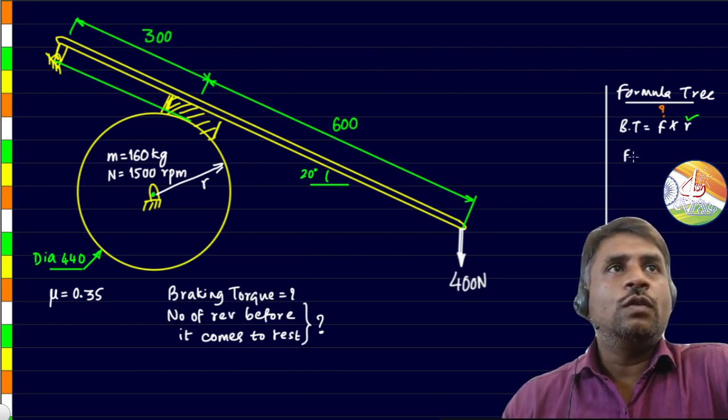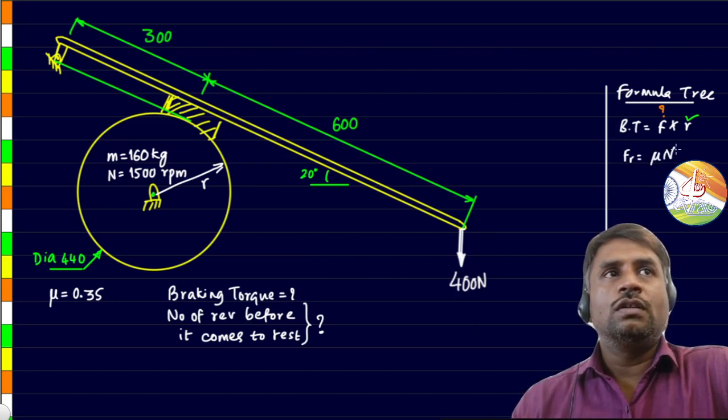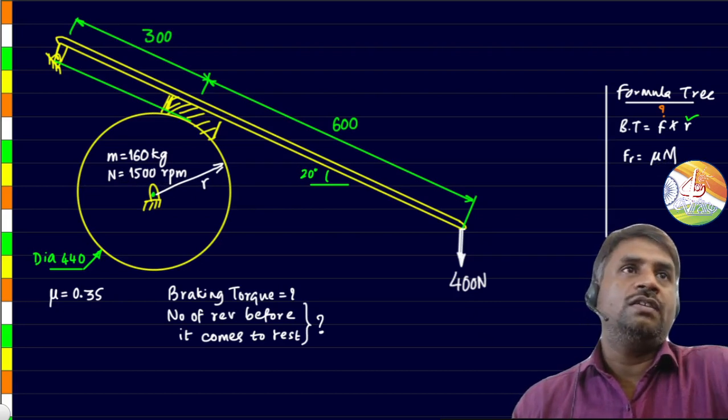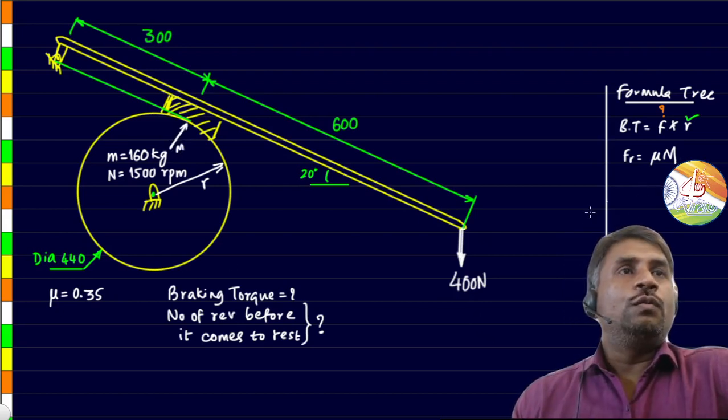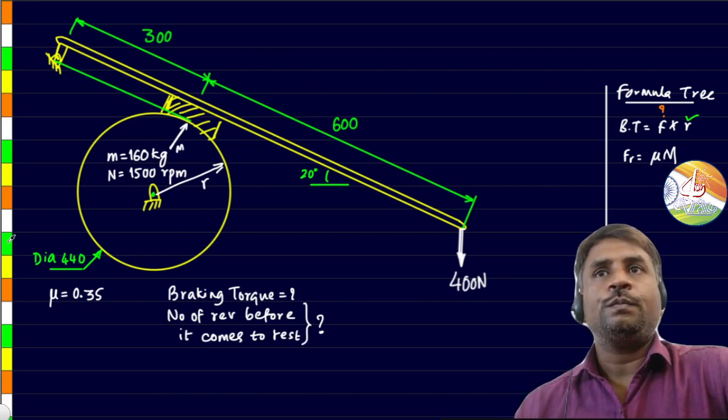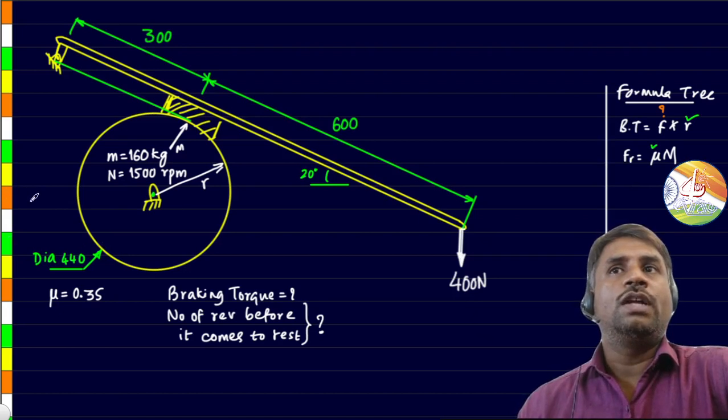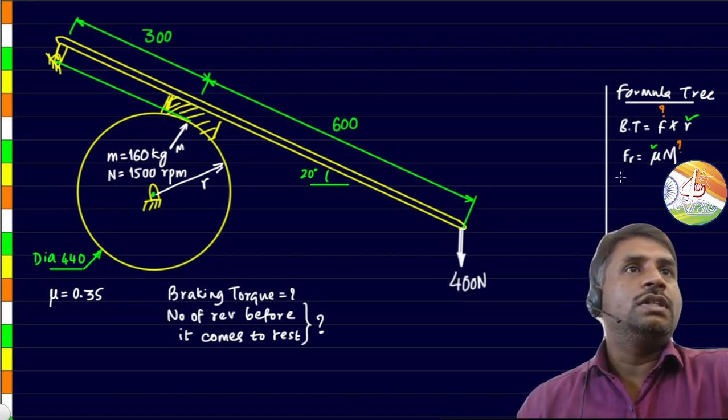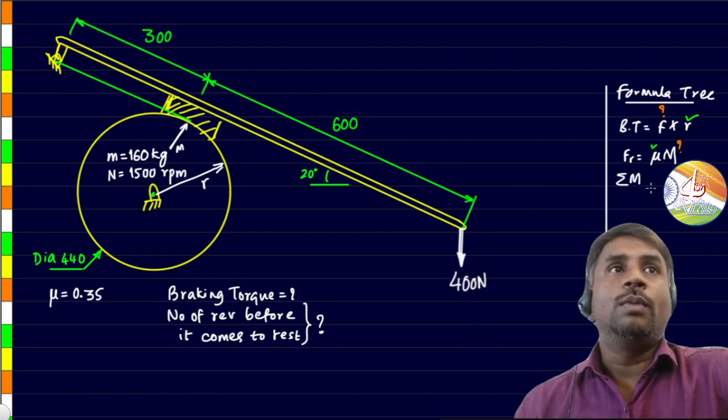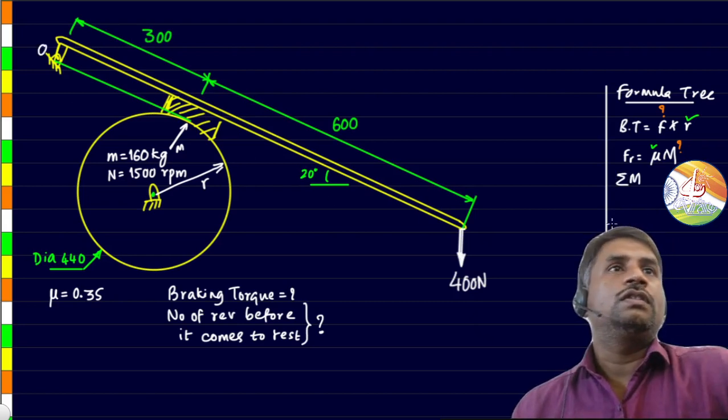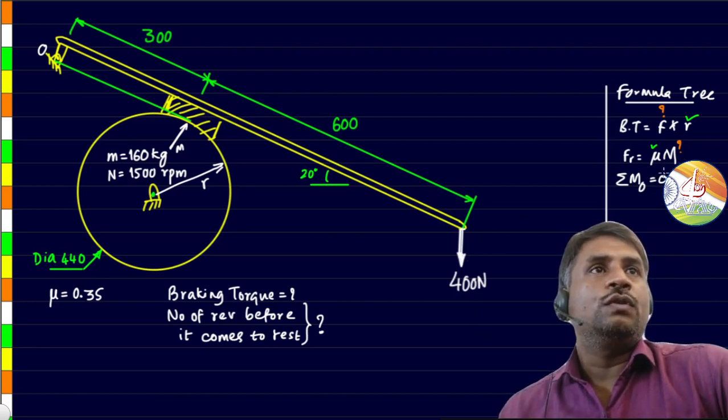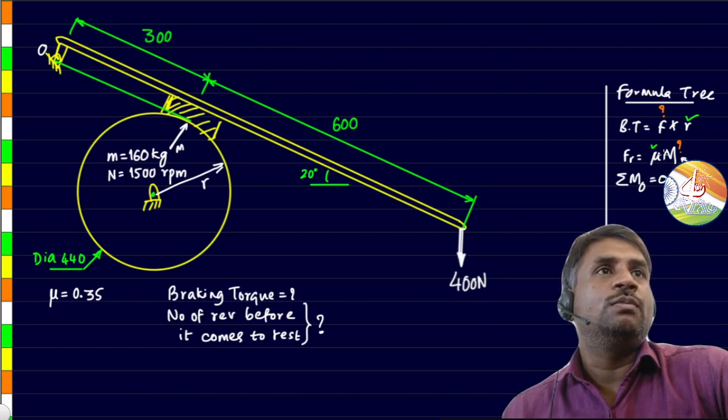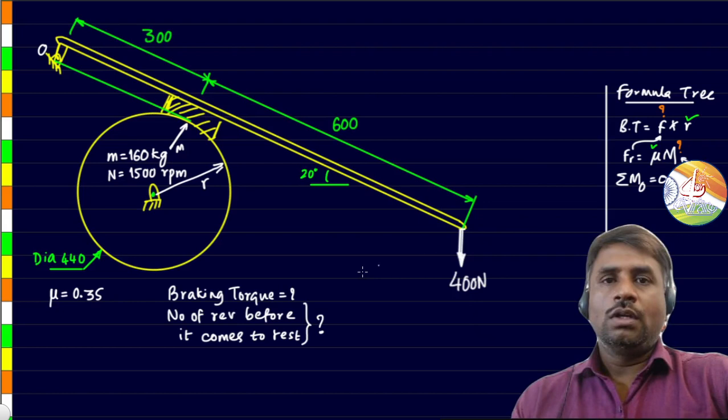Let us write down the formula for the force of friction, that is equal to mu times the normal reaction. Because capital N we are using for the speed, let us use the term M to represent the normal reaction. Normal reaction will be acting over here. To find M, the value of coefficient of friction is known but the value of M we need to find. In order to find that we will have to take the sum of moment of all the forces about the fulcrum point O. When we equate it to zero we have a chance of getting this M. With this we will be able to get M, substitute over here to get the friction force, and then we will end up with the braking torque.